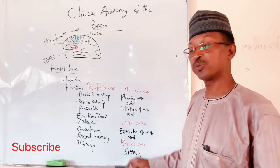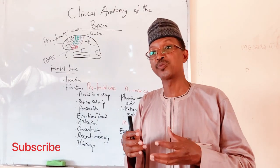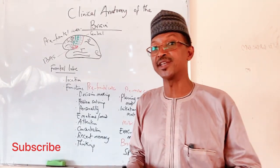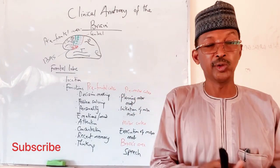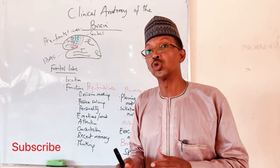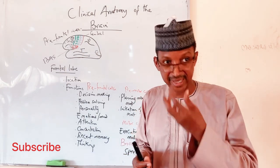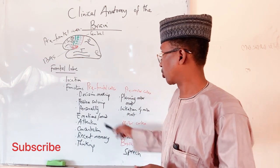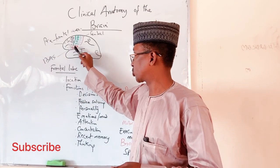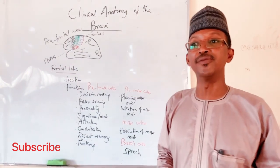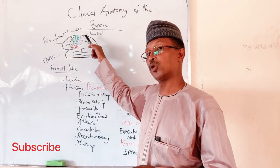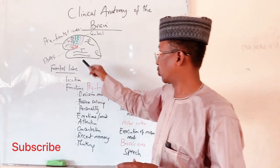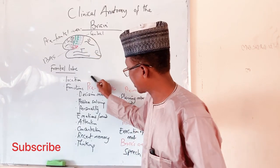Broca's area of speech is responsible for speaking — the ability to express what is in your mind verbally. It lies within the inferior frontal gyrus, just below the prefrontal cortex. So whatever happens to the frontal lobe will affect all of these areas and their functions.